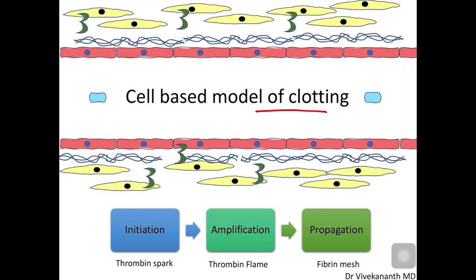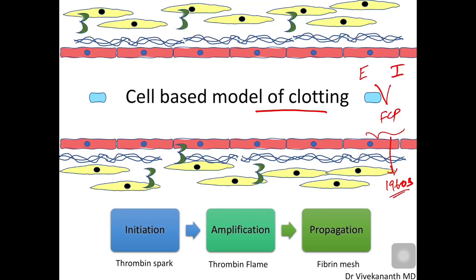Hello everyone. Today we are going to learn about a new model of clotting which is called the cell-based model of clotting. Most of you might be familiar with the older model of coagulation cascade which involves an extrinsic pathway, intrinsic pathway and a final common pathway which leads to fibrin maze formation. This original pathway was developed in the 1960s. The problem is that it could not explain all the phenomena we have seen in the past 50 years. So this cell-based model was proposed to include all the latest developments and whatever we learned from clinical experience.